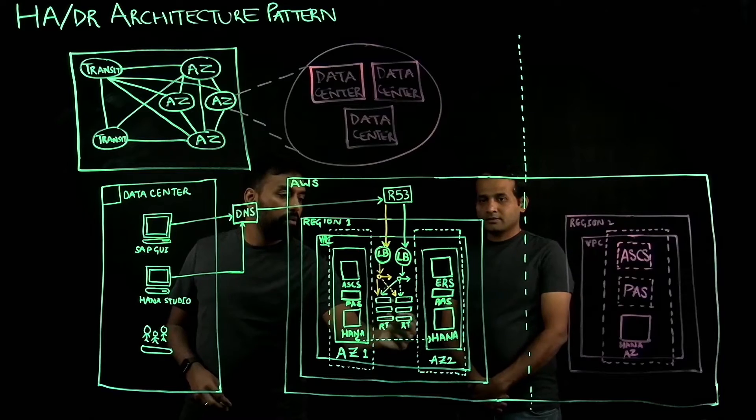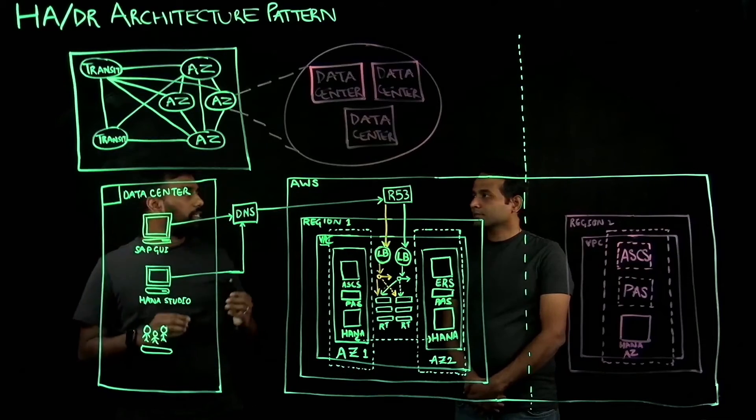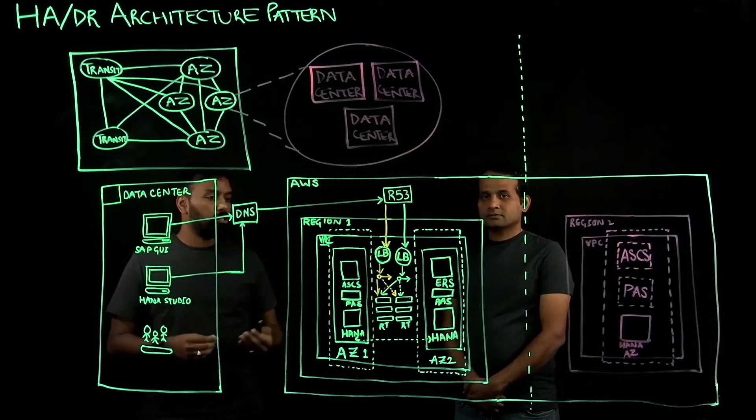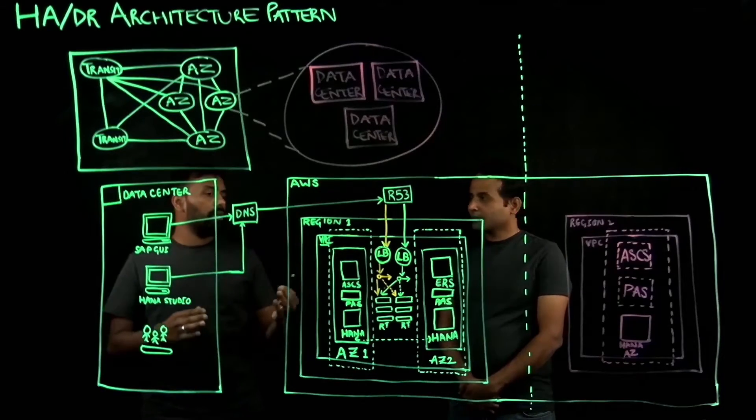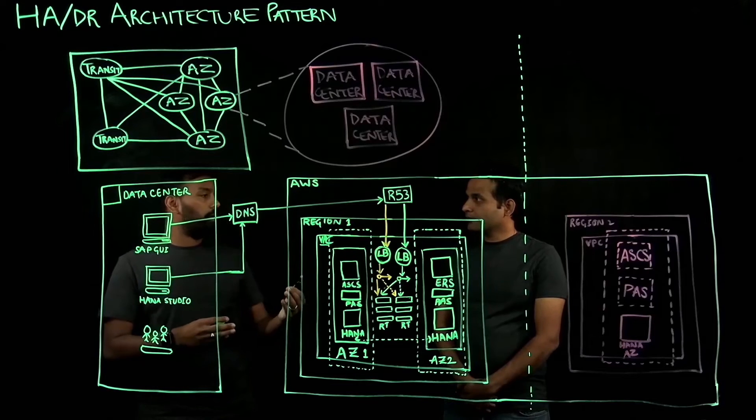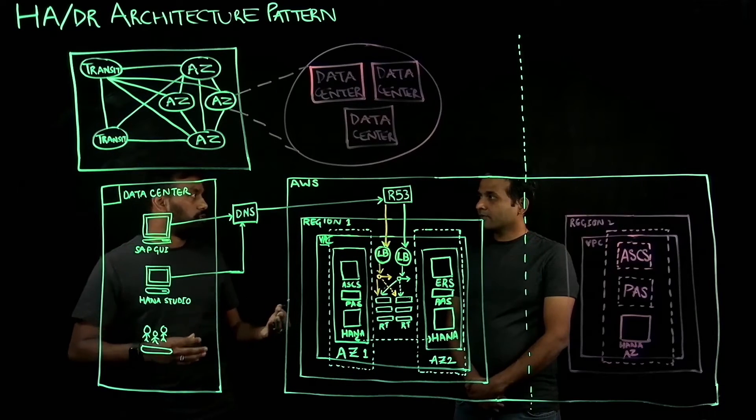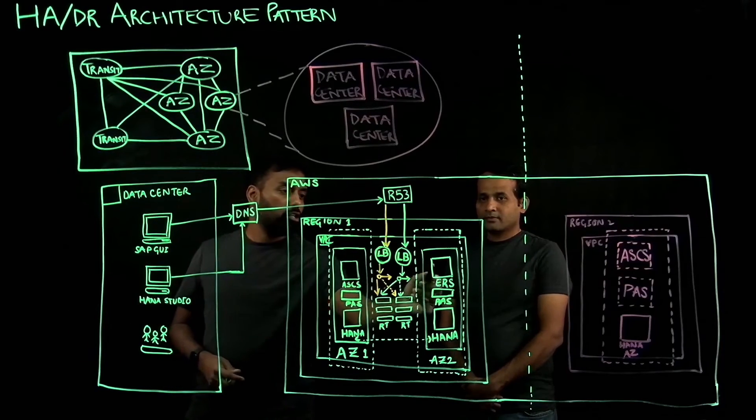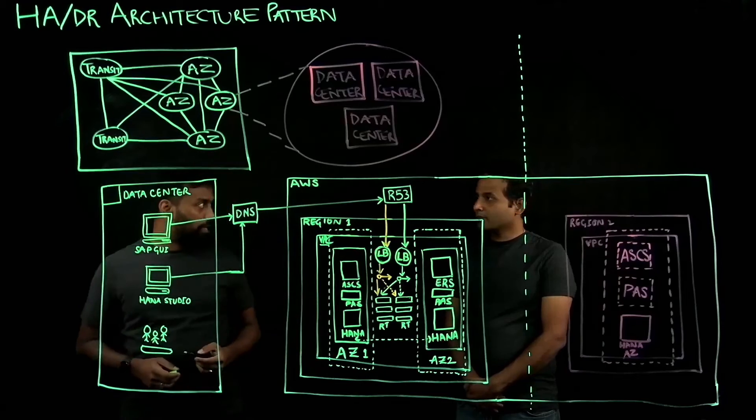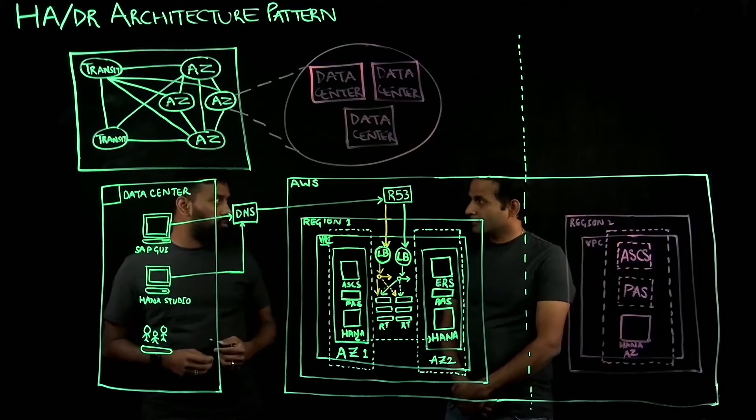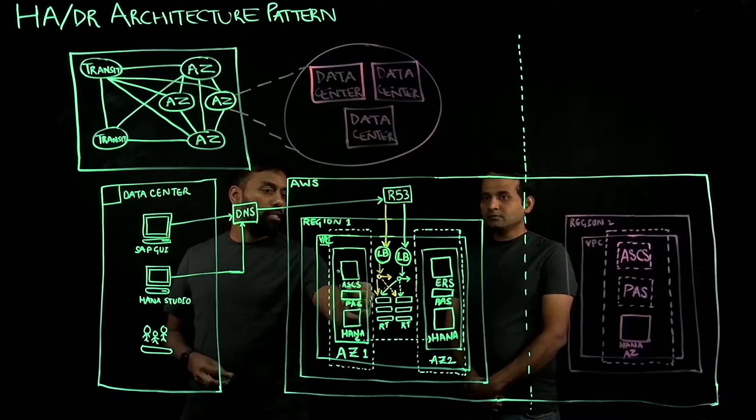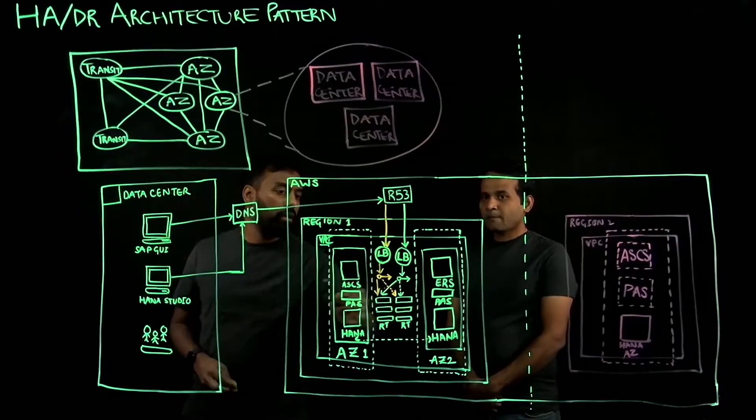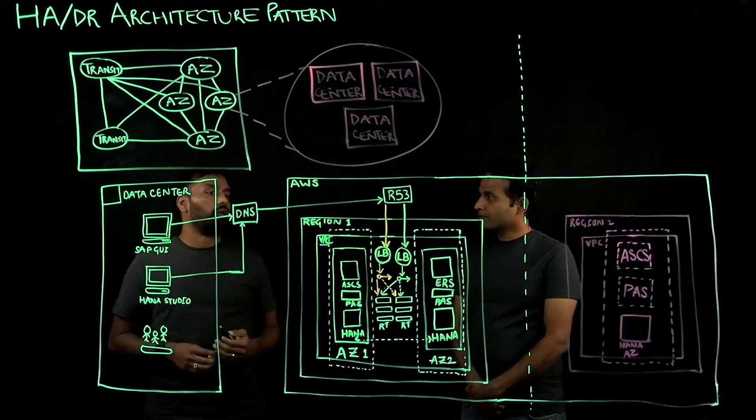This primary and secondary databases are protected using a cluster. This can be a Pacemaker cluster offered by SUSE or RHEL, or it can be provided by third-party solutions like SIOS or other third-party providers. Similarly, your ASCS is also protected by having an ERS, which is your Enqueue Replication Server, and the Enqueue table is replicated over to ERS. This ASCS and ERS pair is again protected by your cluster.